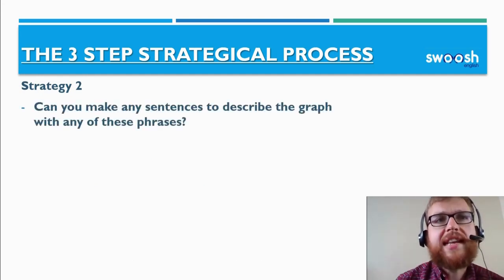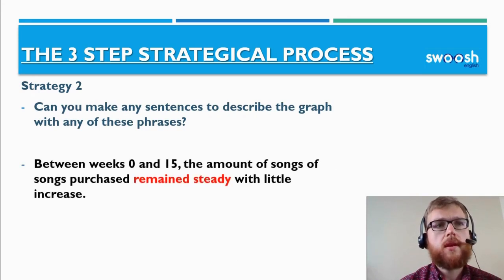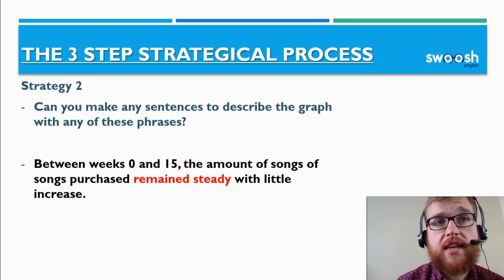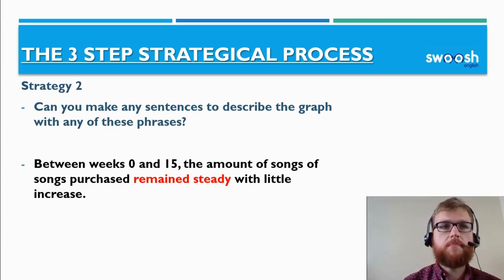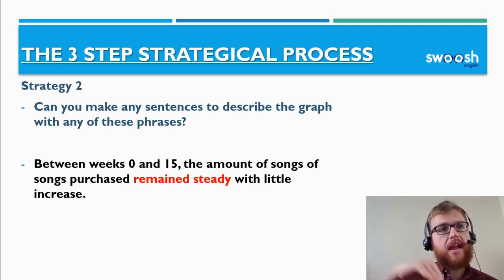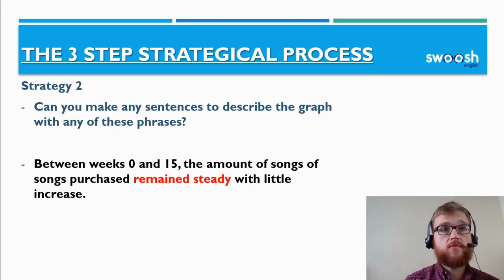Can you make any sentences to describe the graph with these phrases? Here's one example: 'Between weeks zero and fifteen, the amount of songs purchased remained steady with little increase.' Referring back to our graph, we've used the verb 'remain' and the term 'steady' to describe the flat line in the graph, which earns extra points.